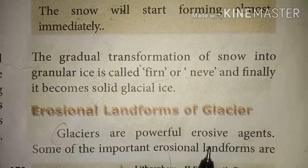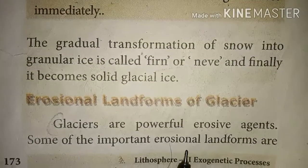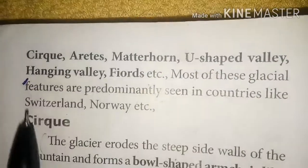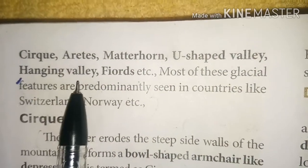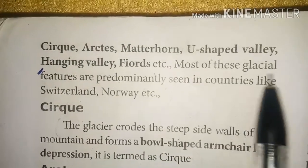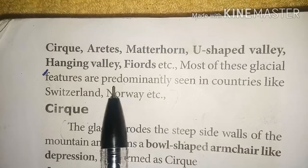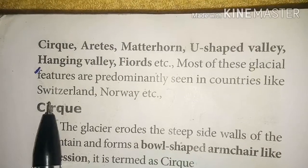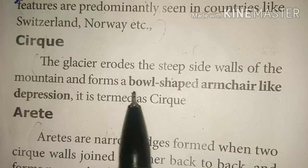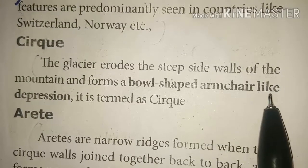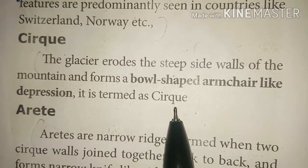Glaciers are powerful erosive agents. Most of these glacial features are predominantly seen in countries like Switzerland and Norway, etc. The glacier erodes the steep side walls of the mountain and forms a bowl-shaped, armchair-like depression. It is termed as cirque.